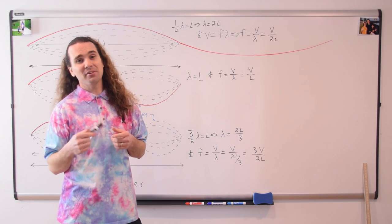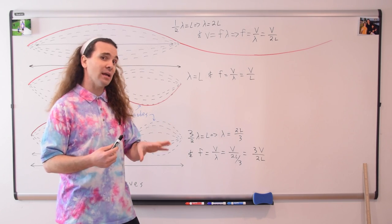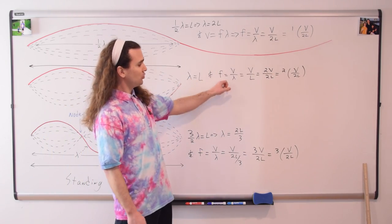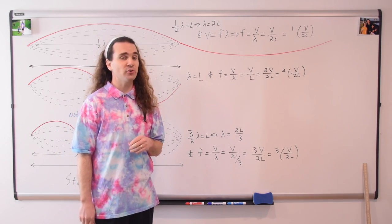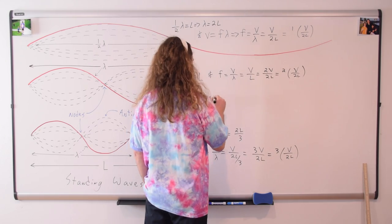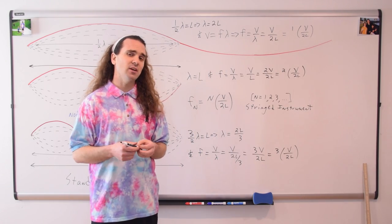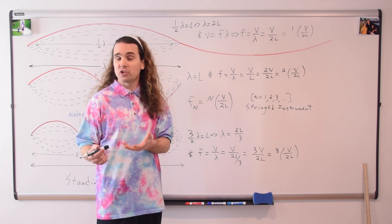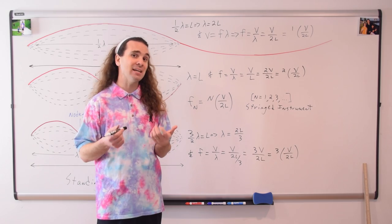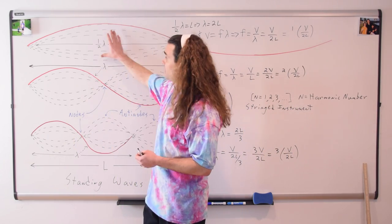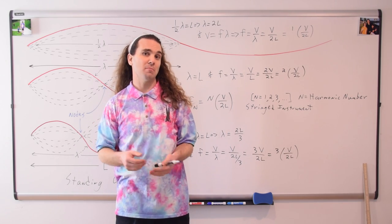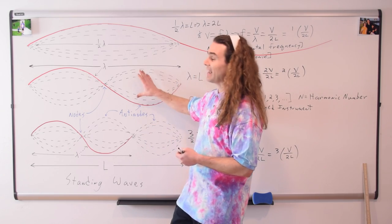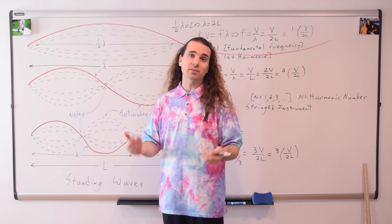We're creating a pattern: the frequencies are one, two, and three times the velocity divided by two times the length of the string. This gives us the general equation for the frequency of a stringed instrument, like a guitar or cello, where n is called the harmonic number. When n equals one it is called the fundamental frequency or first harmonic; when n equals two it's the second harmonic; when n equals three it's the third harmonic, and so on.